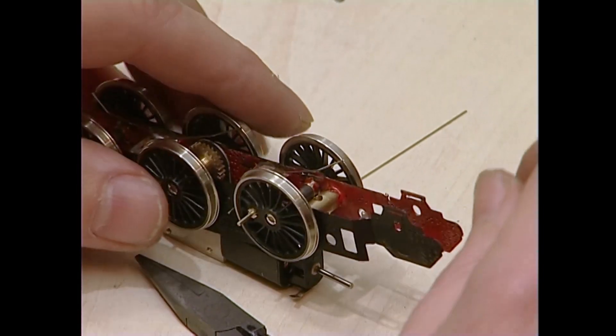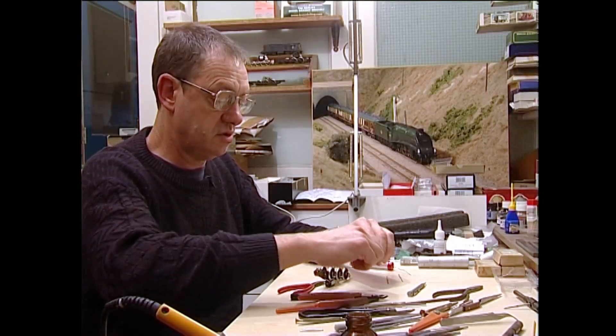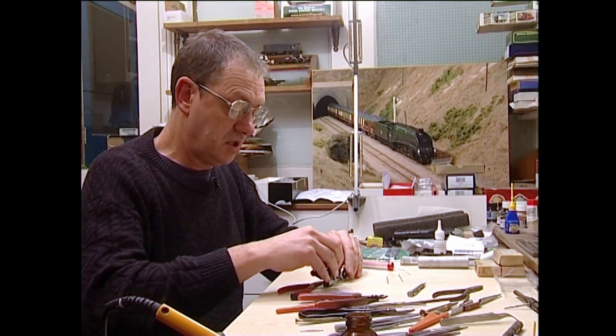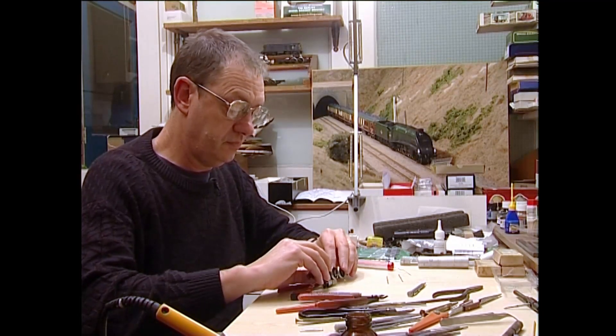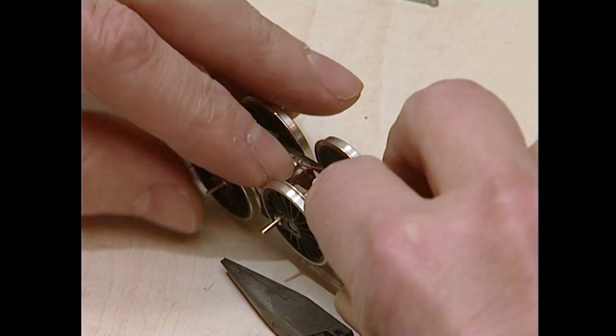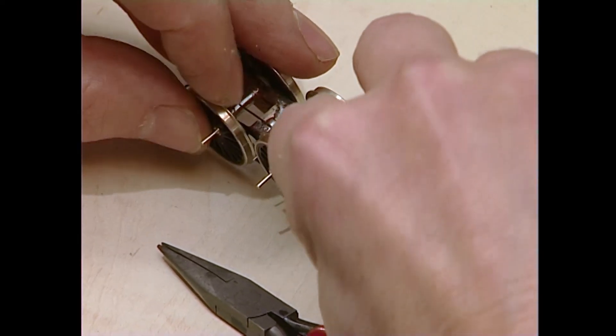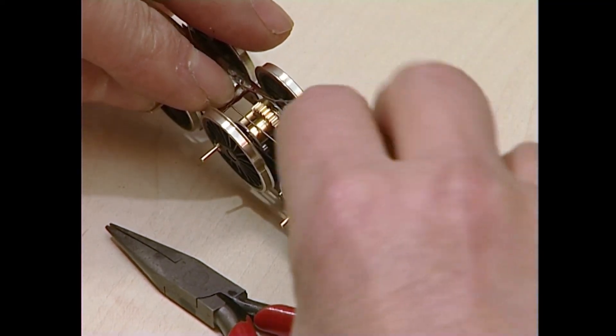Cut it off again. Now the final job requiring wire is to link the two pickup pads together. So what I'm going to do is stretch a further piece across. Again, you must make sure it mustn't touch any part of the gear wheel.